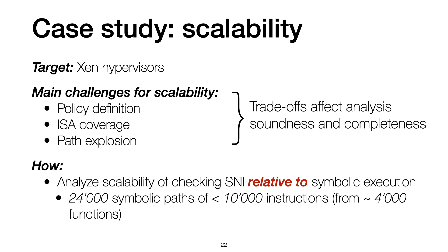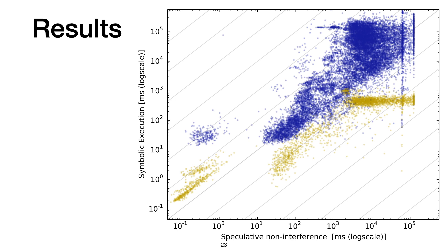To evaluate Spectator's scalability despite these limitations, we compared the time spent on checking speculative non-interference relative to the time spent for discovering new symbolic paths. By analyzing paths of different lengths, we were able to evaluate the scalability of checking speculative non-interference relative to that of symbolic execution, which factors out the path explosion problem. Concretely, we analyzed 24,000 paths of at most 10,000 instructions each. This plot illustrates the results. On the X axis, we have the time needed to check whether a symbolic trace violates speculative non-interference. On the Y axis, we have the time needed to discover the symbolic path. Both axes are log-scale.